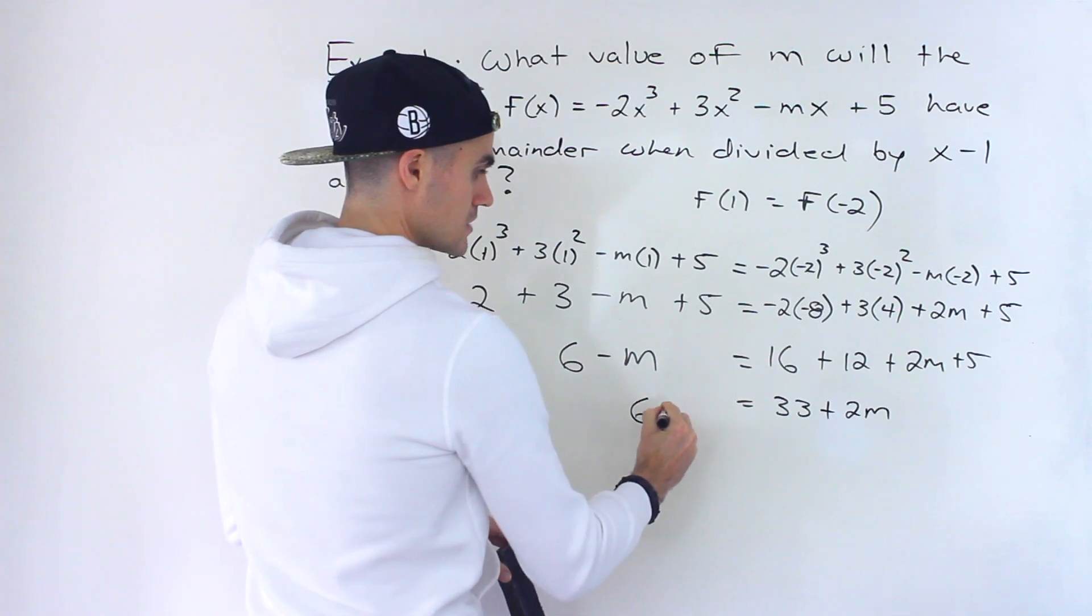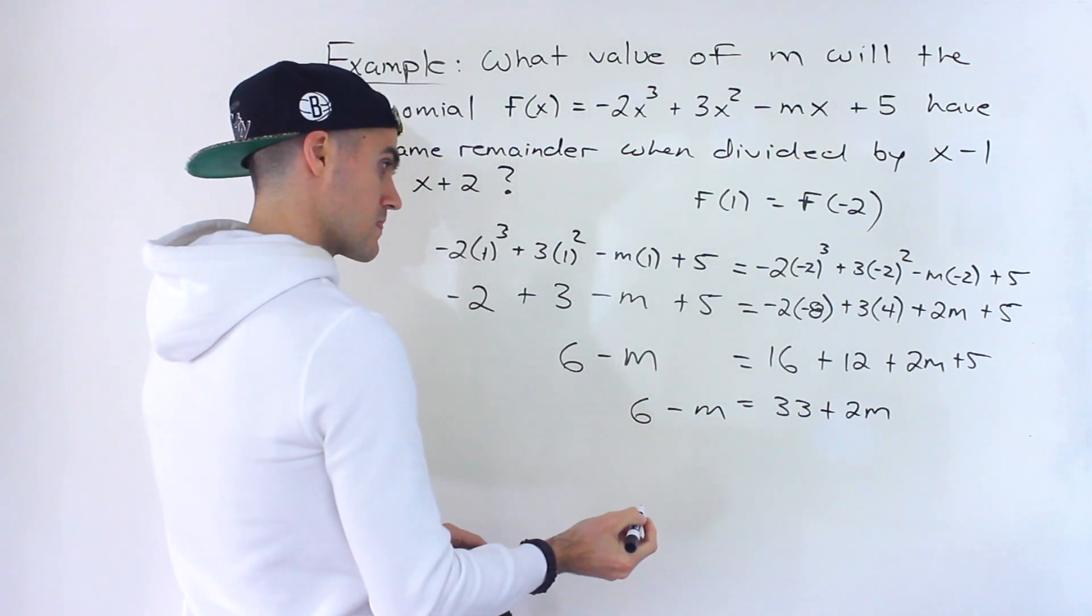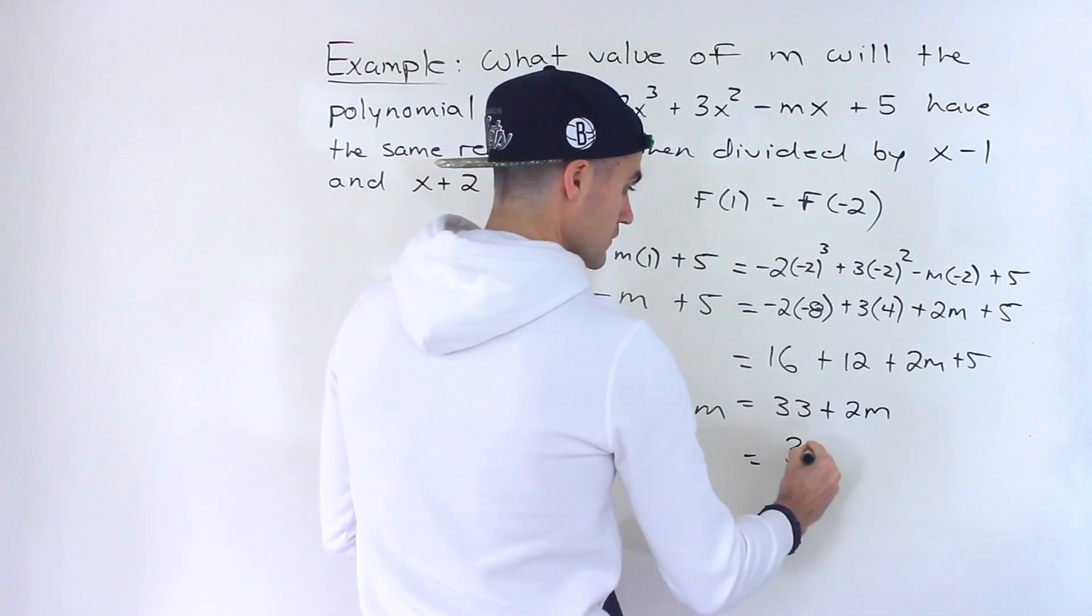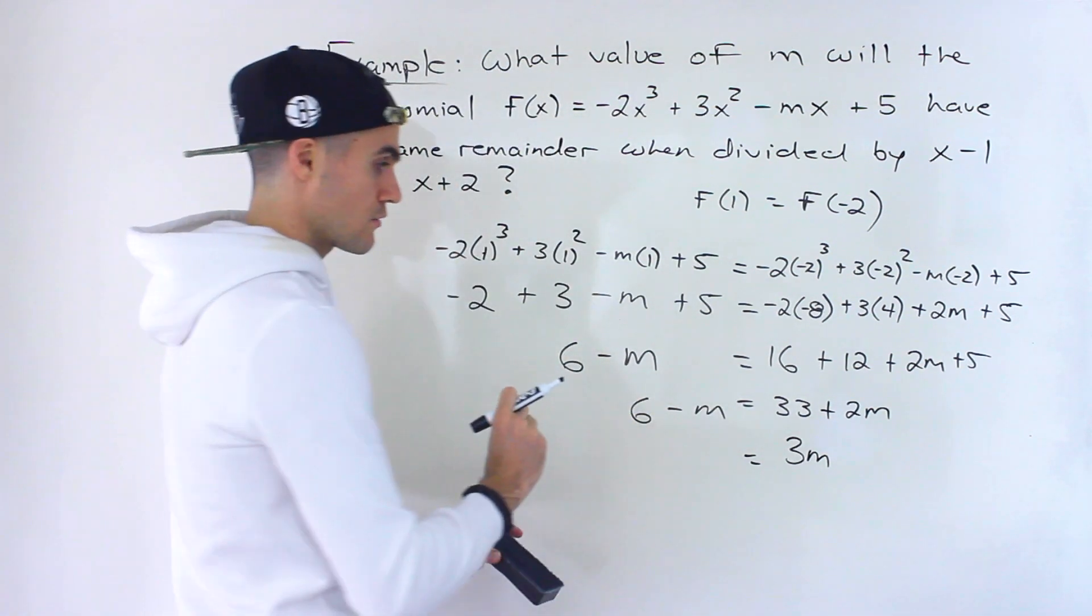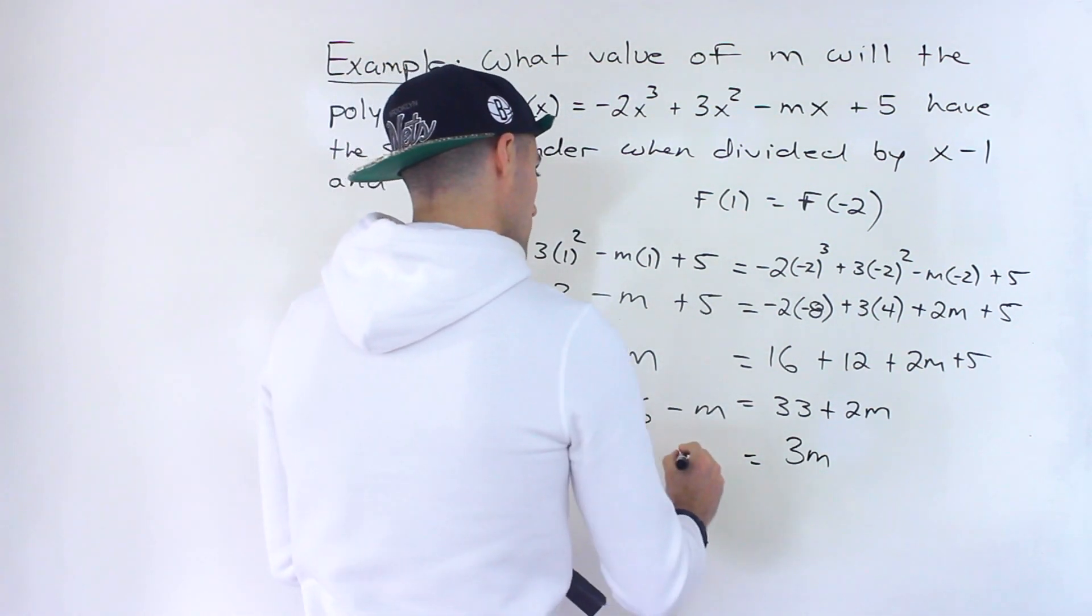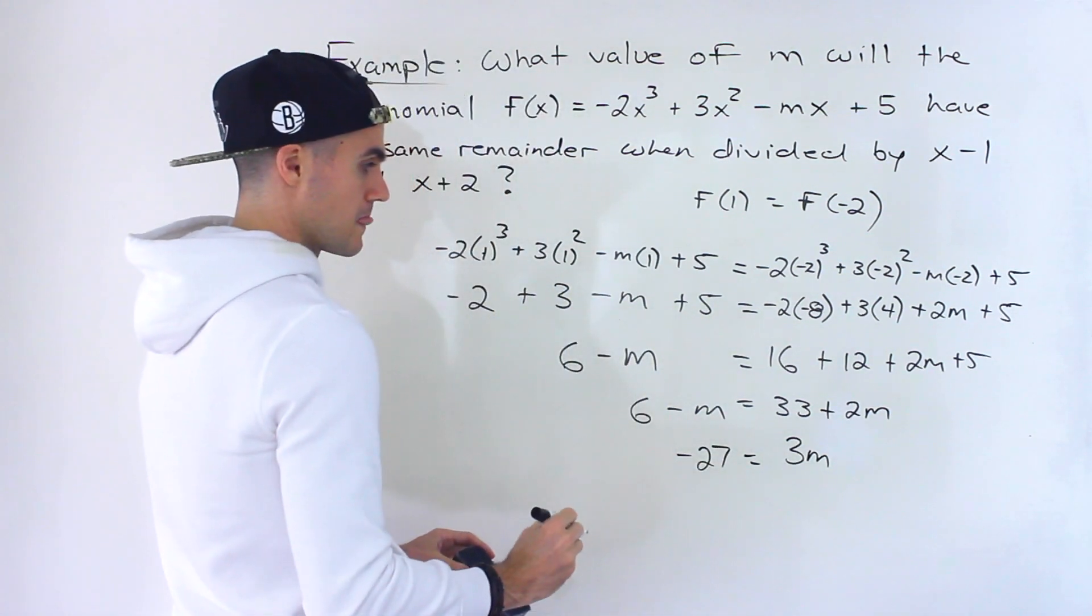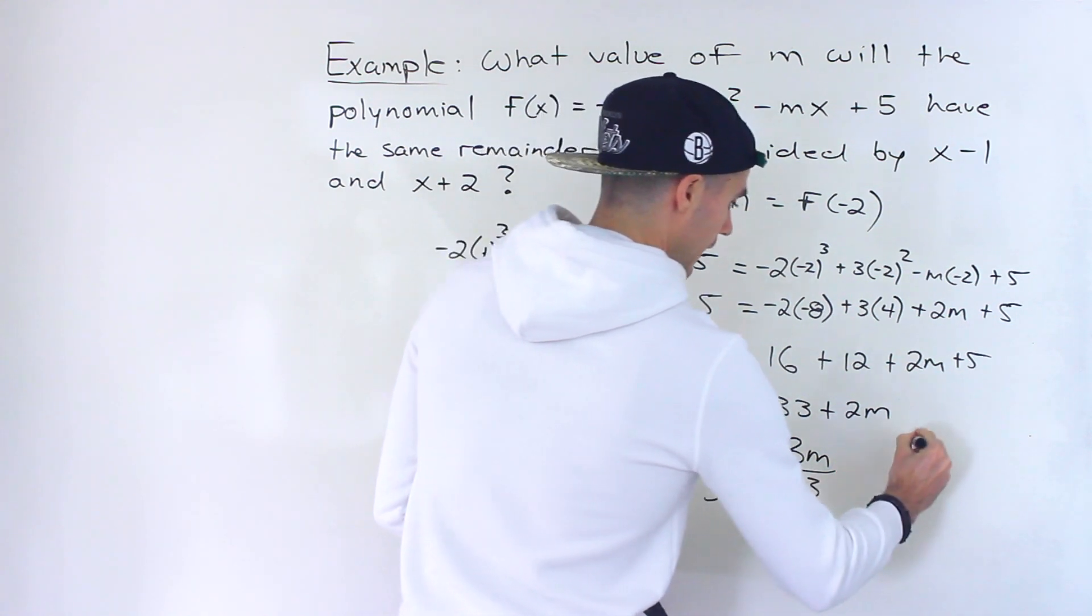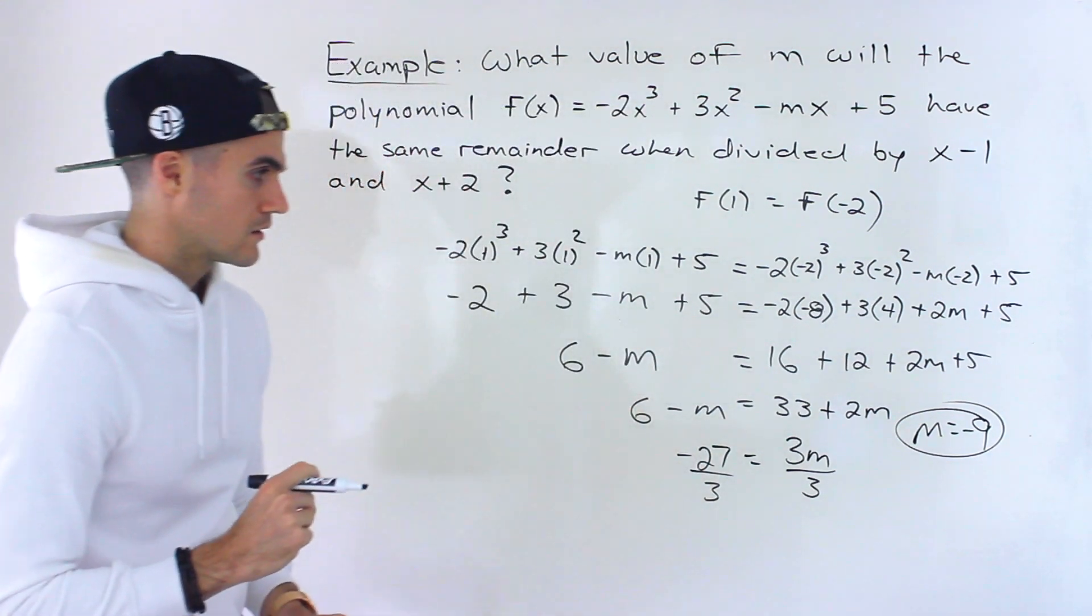So we have 6 - m. Bring the -m over, so we'd have 2m + m which gives us 3m. Bring the 33 over, 6 - 33 gives us -27. Then just divide both sides by 3. m equals -9.